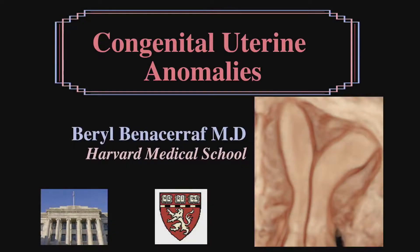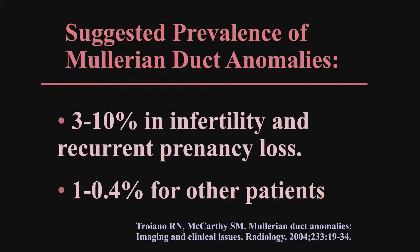The next talk is about congenital uterine malformations, as they have a lot of relevance to what happens in the first trimester. It's very important that we are able to recognize them sonographically. They're obviously easier to recognize when the patient's not pregnant, but we'll go over what happens when the patient does get pregnant. They are certainly associated with infertility and recurrent pregnancy loss, which is why they are important to consider in this setting.